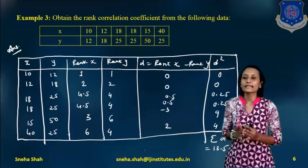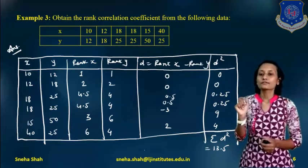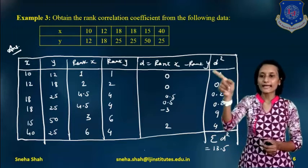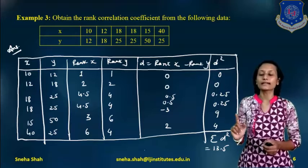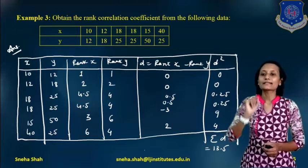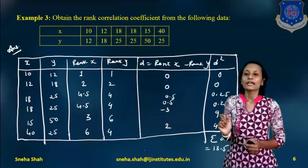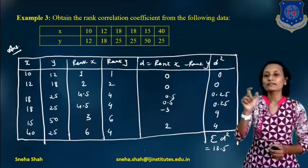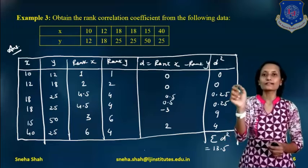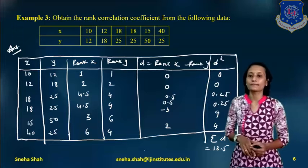For x equals 10, 12, 18, 18, 15, 40, arranging in ascending order gives 10, 12, 15, 18, 18, 40. So 10 is rank 1, 12 is rank 2, 15 is rank 3. Since 18 appears twice, it occupies ranks 4 and 5, so we take their average: 4 plus 5 divided by 2 equals 4.5. Both 18s receive rank 4.5. Then 40 is rank 6.